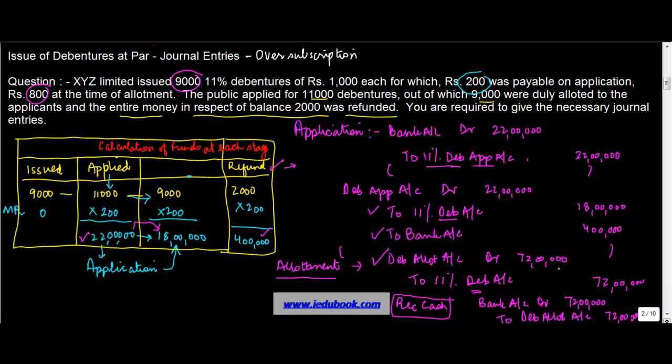What was the catch here? The catch here was that you had to see that if you received money for 11,000 accounts, you apply only 9,000. So you got 22 lakh but you applied only 18 lakh. And the balance 4 lakh was to be refunded. There is no impact at the time of allotment because all this thing happens at the time of application.